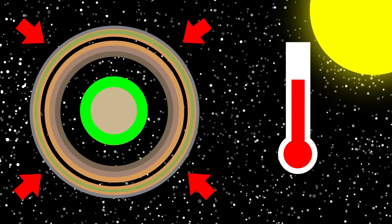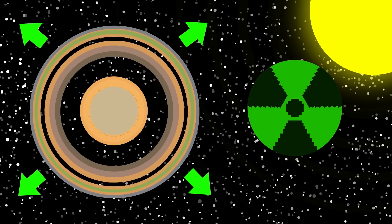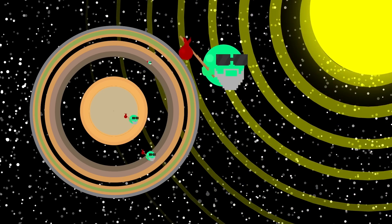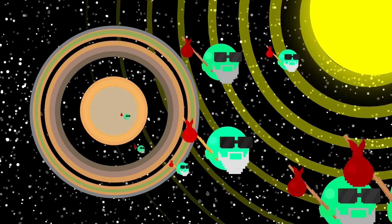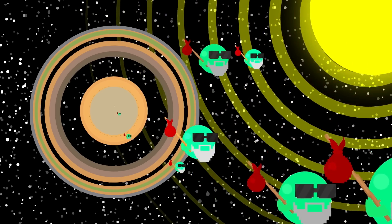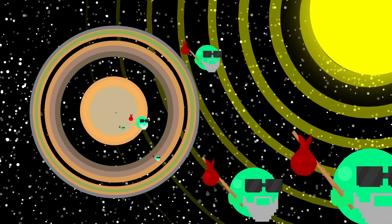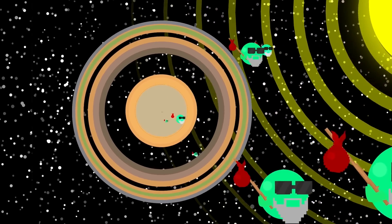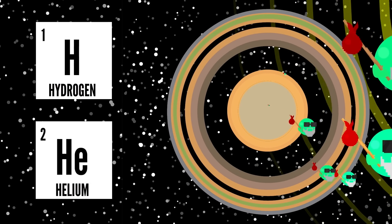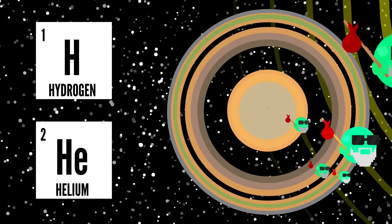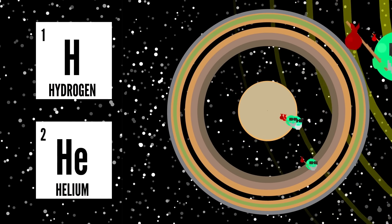The heat would excite the molecules and could make them reach escape velocity, where they could break free from the planet's gravity. This is how we lose hydrogen here on Earth. And since Saturn's atmosphere is primarily made up of hydrogen and helium, which are both lightweight molecules, it could leave the planet without an atmosphere.